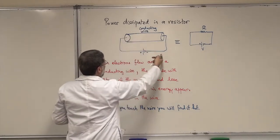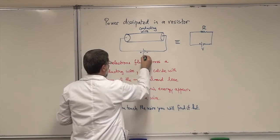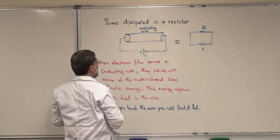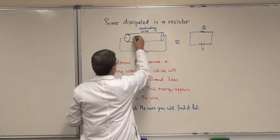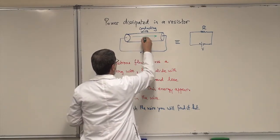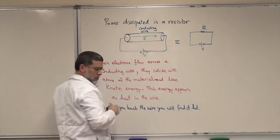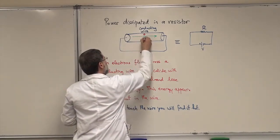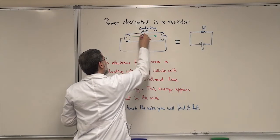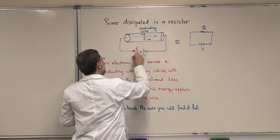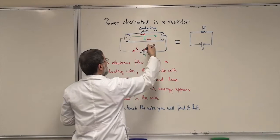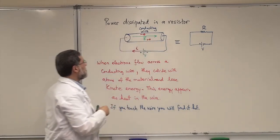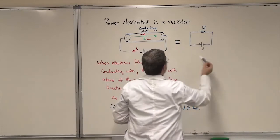You connect it to a battery with potential V. You create an electric field inside the wire. The electrons start moving in the opposite direction — you have a current I, the flow of positive charges, and the electrons are moving the other way. We can represent this by this schematic diagram here.